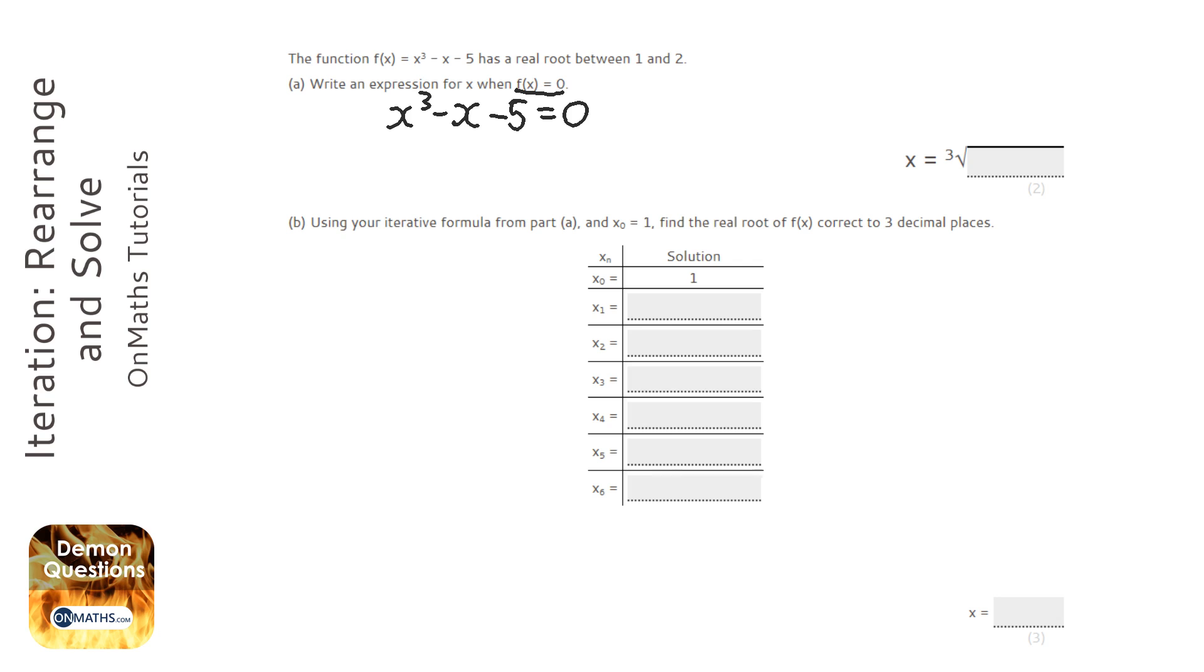Now the question has given you a hint because it says that it involves a cube root. So we know that we're going to have x cubed equals something, and then we're going to cube root both sides. We're going to add x and add 5 to both sides, and then cube root both sides. So our iteration formula is going to be the cube root of x plus 5.